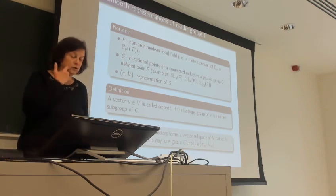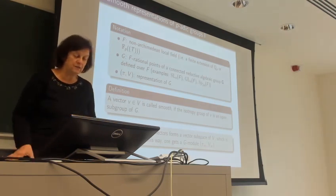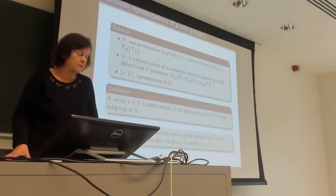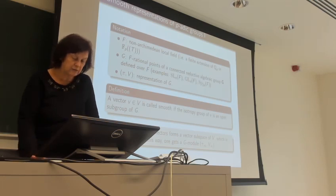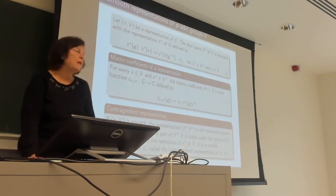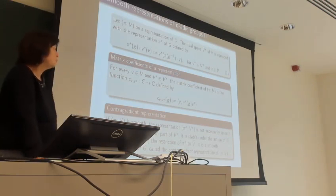If I consider the subspace of smooth vectors in V with the same action, it is stable under G, and I get a sub-representation, which is sometimes called the smooth part of my representation V.